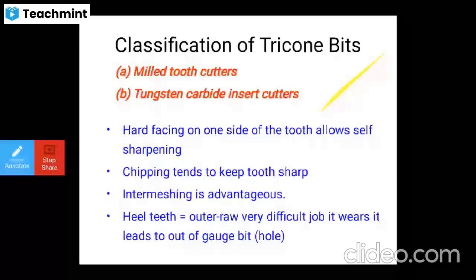This is a tungsten carbide insert cutter used in rolling cutter bits. The different insert types include gauge compact, ovoid, conical, chisel, wedge chisel, thruster chisel, scoop chisel, blunt chisel, and sharp chisel.